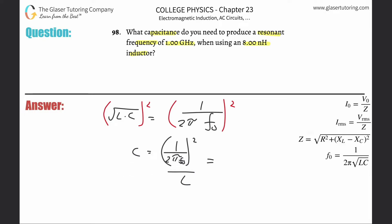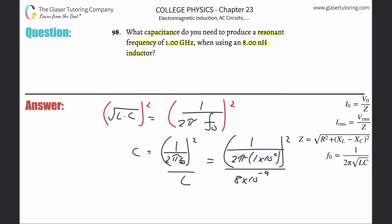All we have to do now is plug in the numbers. This is going to be 1 divided by 2π multiplied by the resonant frequency of 1 gigahertz — giga is 10 to the 9th, so that's 1 times 10 to the 9th — and square that whole thing in the numerator, then divide by the inductance. That's 8 nanohenrys, which we convert to henrys as 8 times 10 to the minus 9th.